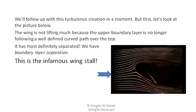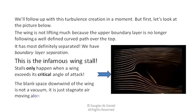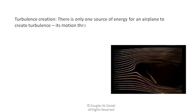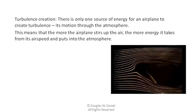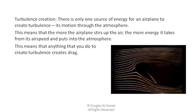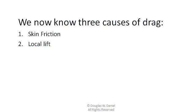This is the infamous wing stall. Stalls only happen when a wing exceeds its critical or maximum angle of attack. The blank space downwind of the wing is not a vacuum — it is just stagnant air moving along with the wing. There is only one source of energy for an airplane to create turbulence: its motion through the atmosphere. The more the airplane stirs up the air, the more energy it takes from its airspeed and puts into the atmosphere. This means that anything you do to create turbulence creates drag. Not only does a wing stall create massive drag, but deploying flaps, landing gear, spoilers, ailerons, etc., also increases drag. We now know three causes of drag: skin friction, local lift, and turbulence.